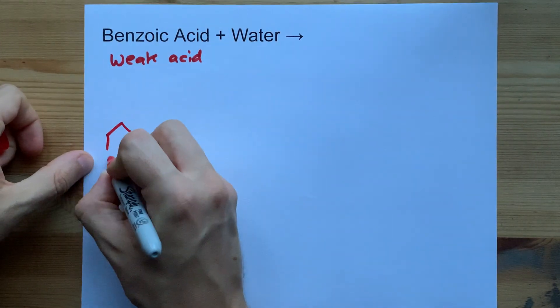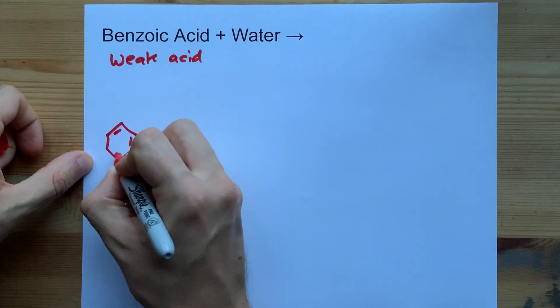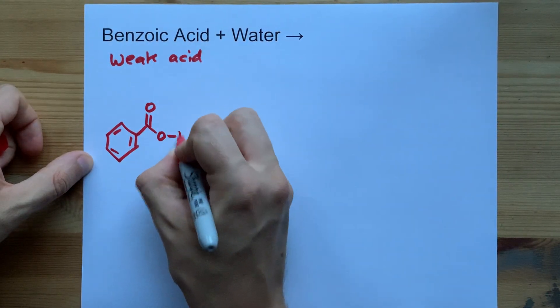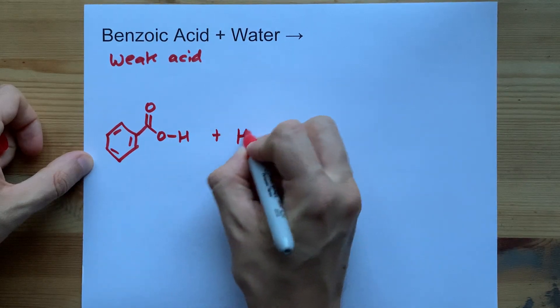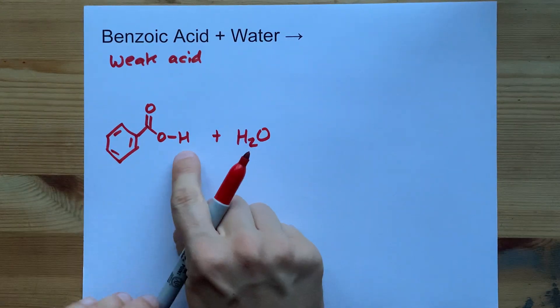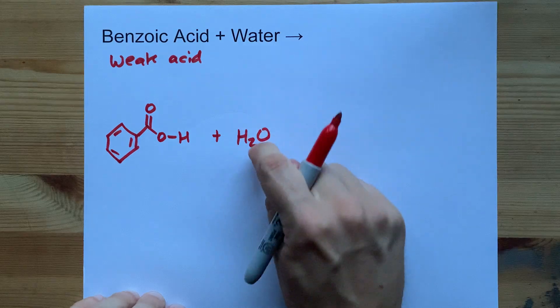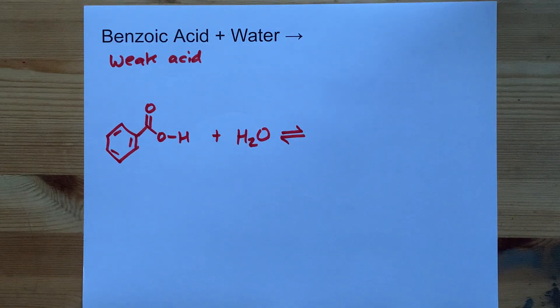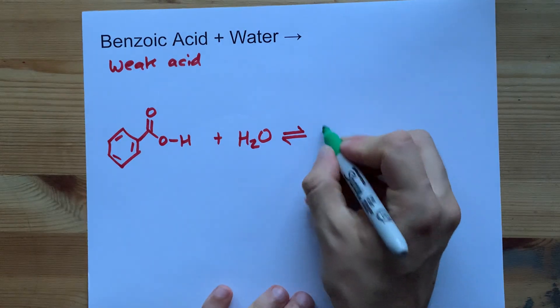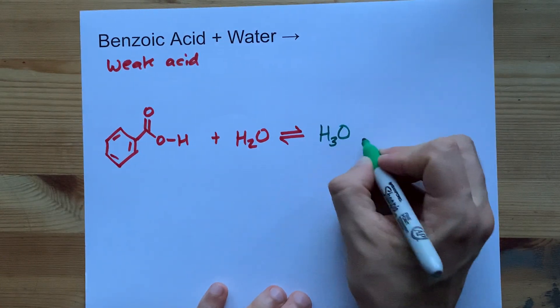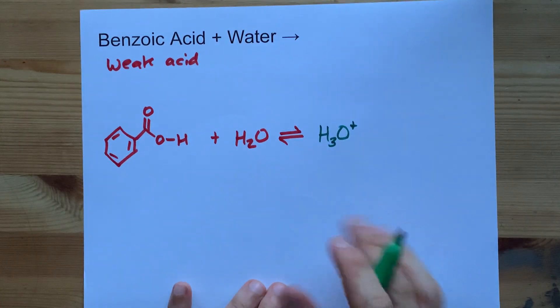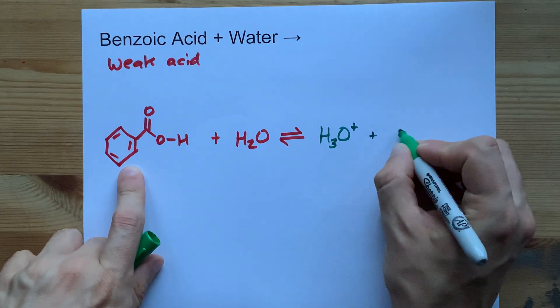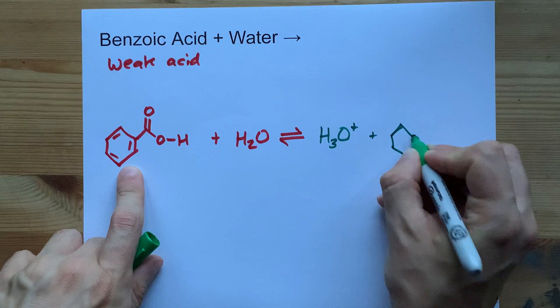What I mean is if you draw benzoic acid with the COOH group and you draw the water, this H is going to move to the water itself. That is going to give you the hydronium ion H3O+ with an extra charge because it has an extra H, and this is going to be left without one of its H's.